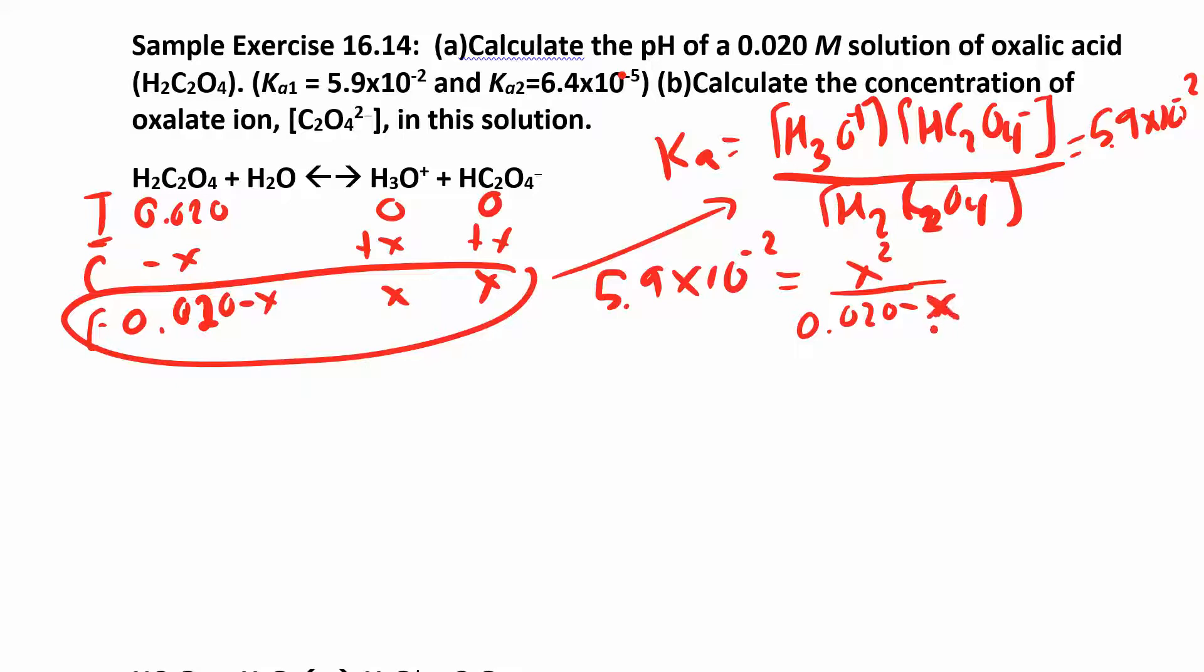You're going to need to use the quadratic. If you remember the quadratic equation, first thing you want to do is get this in the format that looks like ax squared plus bx plus c equals 0. We're going to take this bottom part and multiply over, so you have 5.9 times 10 to the negative 2 times 0.020 minus x equals x squared.